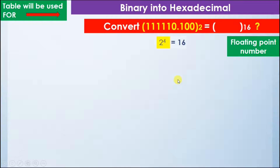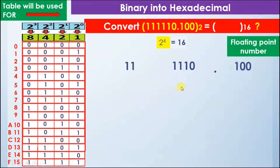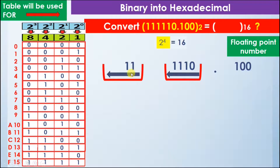Since 2 raised to power 4 equals 16, we use the hexadecimal table. We make groups of 4 bits while moving away from the decimal point. First, we write 1 1 1 0, then 1 1 from the remaining bits on the left side. The decimal point follows. For the right group, we have only 2 bits, so we add 2 more zeros to complete the group of 4.